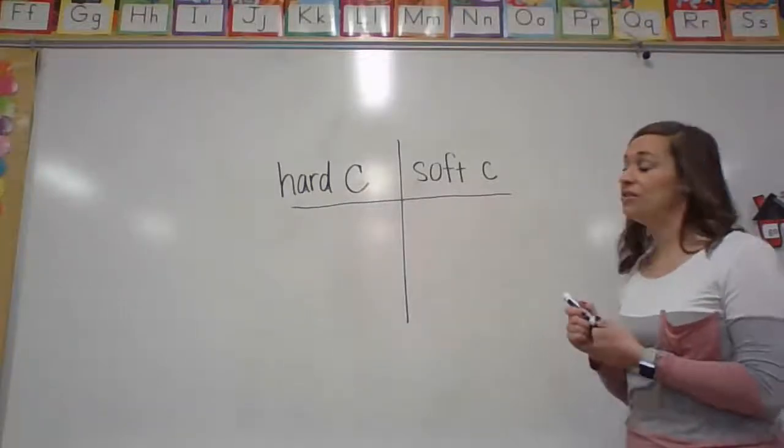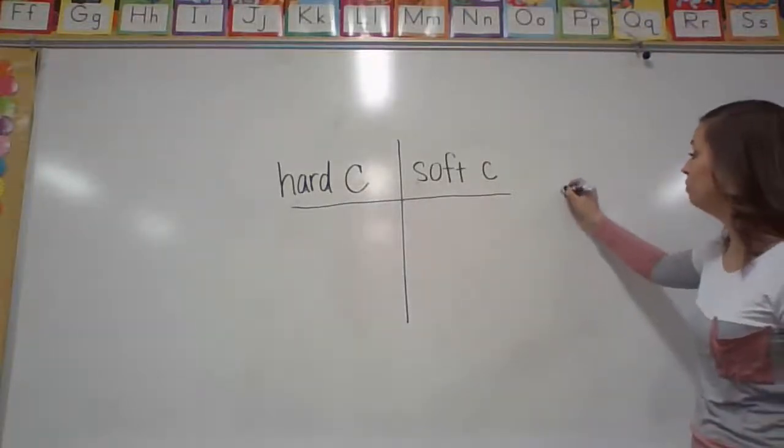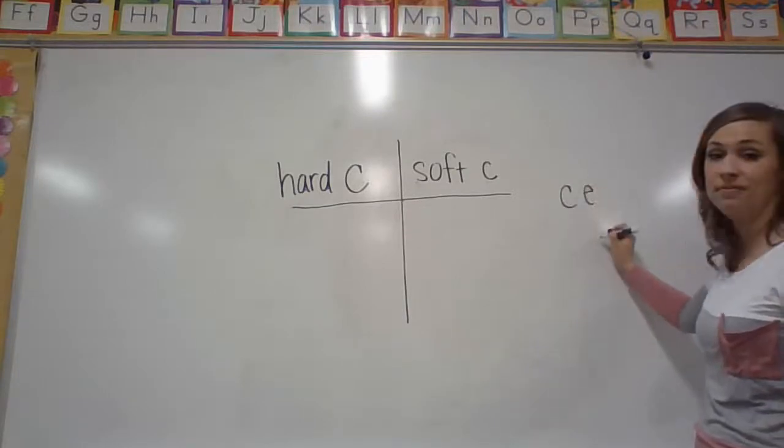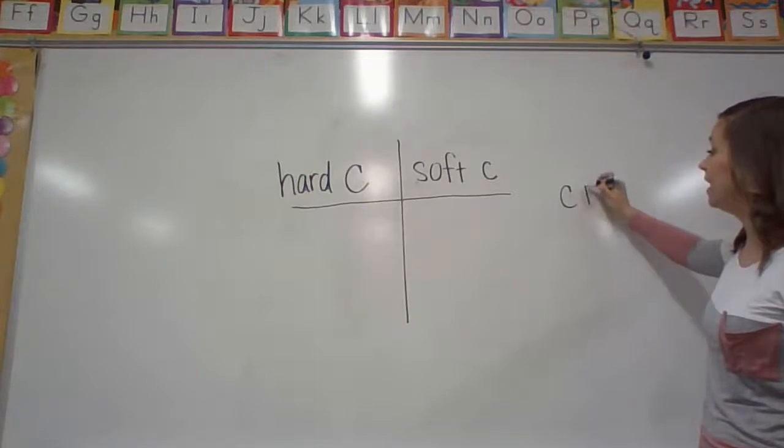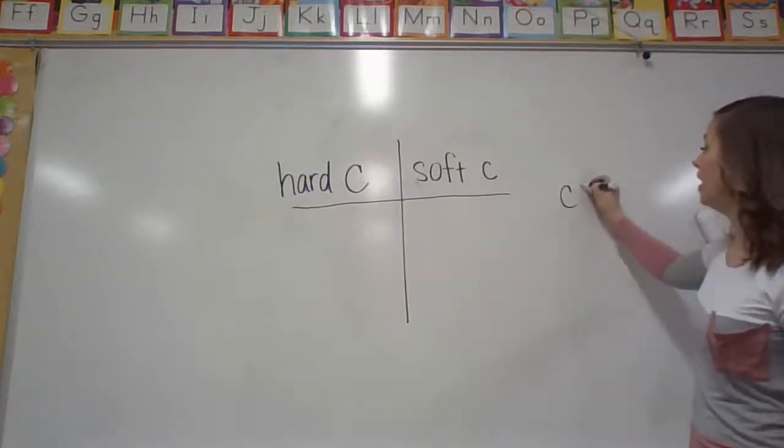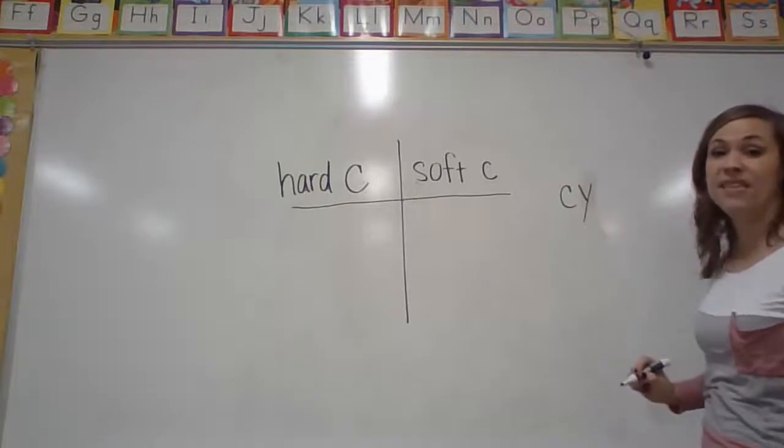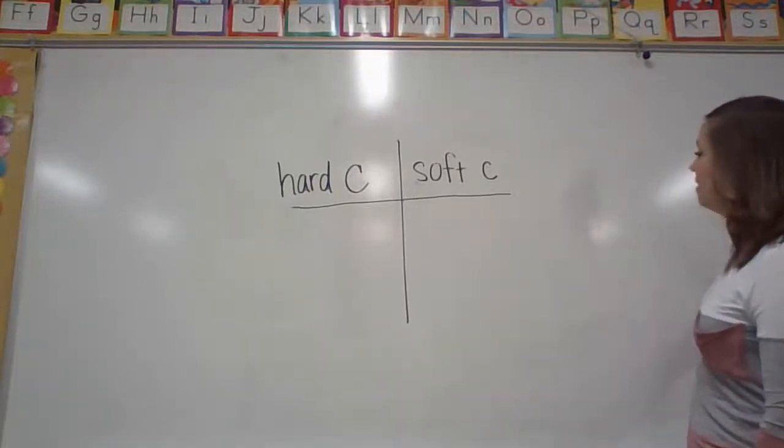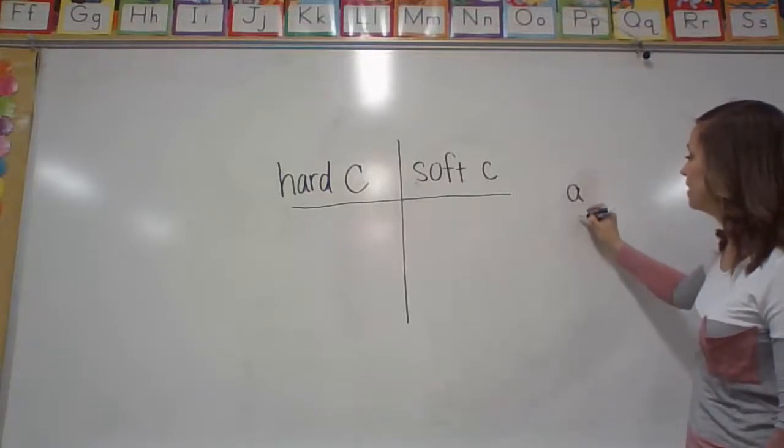If the letter C in your word is followed by an E, or an I, or a Y, then it's going to have a soft C sound. Okay? I'm going to put these letters over here to remind us.